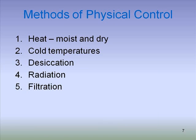Now we'll talk about some physical means of control. Heat is an effective means — both moist heat and dry heat. Cold temperatures can control microbes but are usually not microbicidal; they simply stop microbial division. Desiccation, or removal of water — such as freeze drying or dehydrating meats and vegetables — is effective as long as water is not added back. Radiation targets DNA, with UV light as an example. Filtration of both liquid and air is also used.